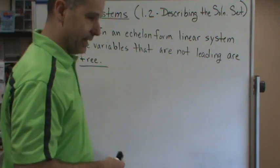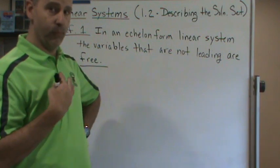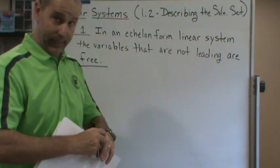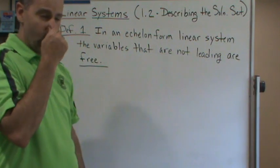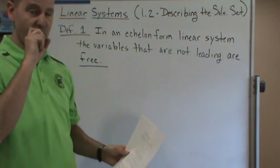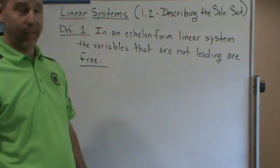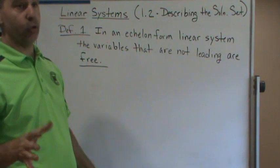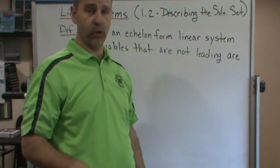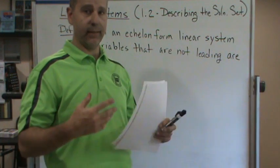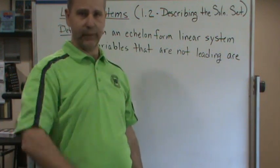And what we're going to see is that means they can be free to be any real number, or they may be dependent on another one that's any real number. Well, that's not exactly right—you could have more than one free variable. So you could have one free variable that can be any real number, or you could have multiple. We'll do examples of that.